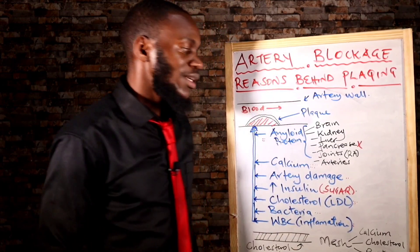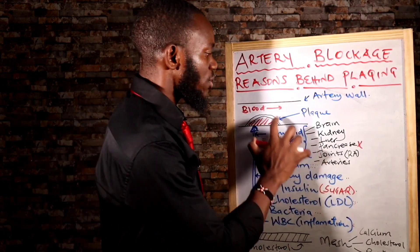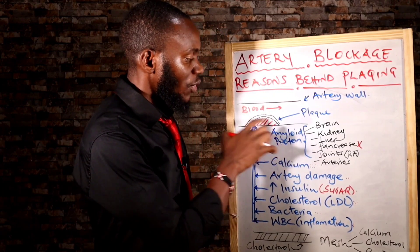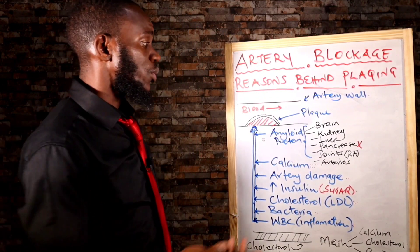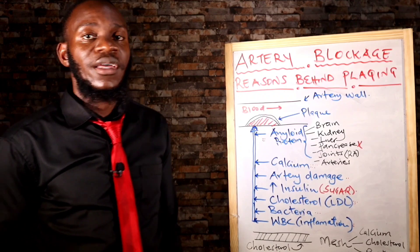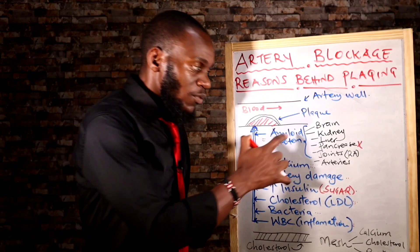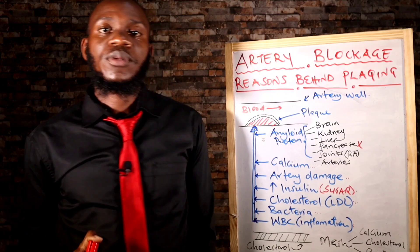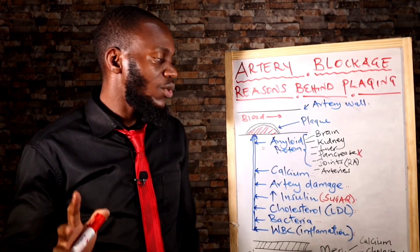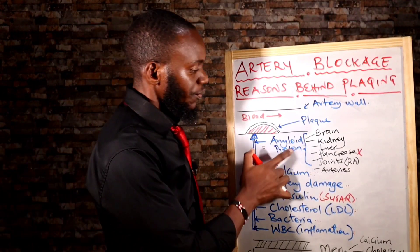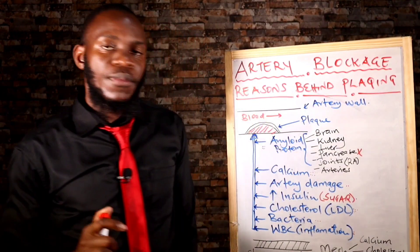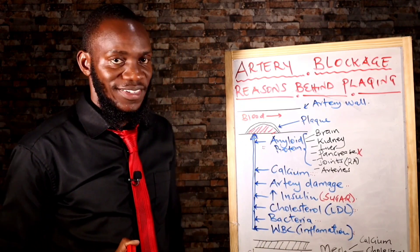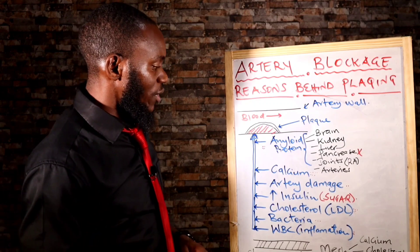In arteries, amyloid causes occlusion. Apart from the protein being directly toxic to the brain, this occlusion also brings problems to the brain because of low supply of oxygen and nutrients. So avoid this protein. How will you avoid it? Start fasting. Simple.